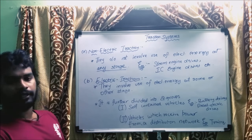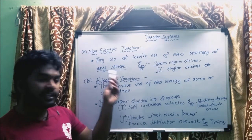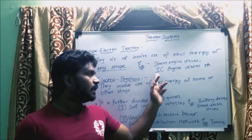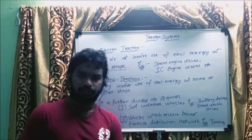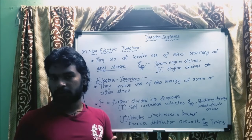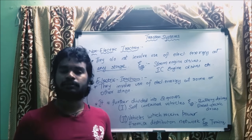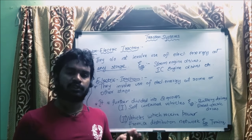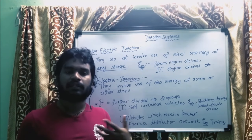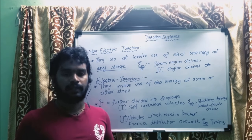Non-electric traction, by the name itself, does not involve use of electrical energy at any stage — not at the input stage, not at the intermediate stage. Examples are steam engine drives and IC engine drives. Steam engine drives work on the same principle as a thermal power plant: a boiler burns coal to produce steam, which flows at high velocity and impinges on a turbine. The same principle is used here, but the turbine is replaced by the wheel of the train.